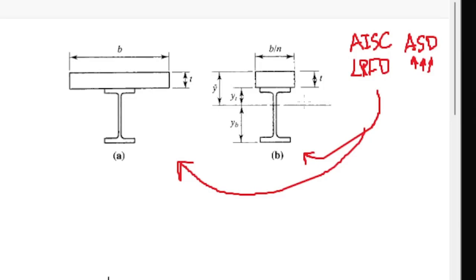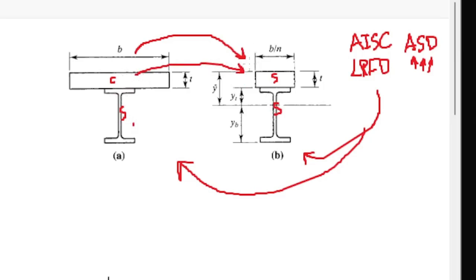The elastic theory for composite sections works after you transform the section — having one material instead of two. You can convert the concrete into steel using the modular ratio N, which is the elastic modulus ratio. Since steel is about 10 times stronger than concrete, an equivalent area of concrete becomes 10 times smaller when expressed in steel terms. Notice that only the width is made smaller (not the thickness) because width is linear in the moment of inertia, whereas thickness is cubic.